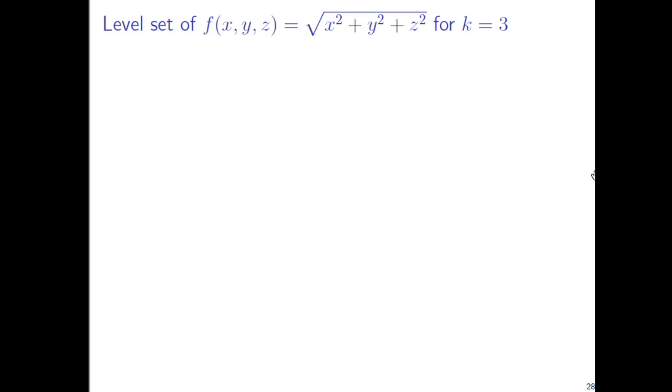So the level set, when we talk about k equals 3, or output 3, this is just asking which points in three-dimensional space, three-dimensional not because of output 3, three-dimensional because the three coordinates x, y, and z, have output 3.